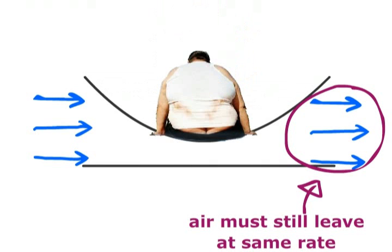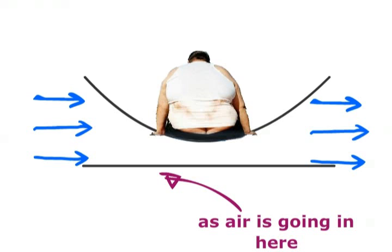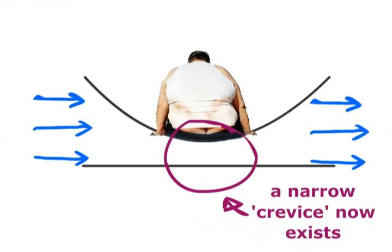But what happens if a fat man sits on my wind tunnel? The air coming out of the wind tunnel must still match the rate that the air is entering it. However, there is now an obesity induced dent in the middle, and this changes proceeding somewhat.